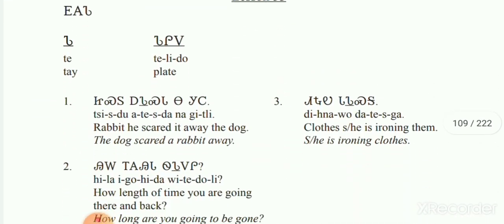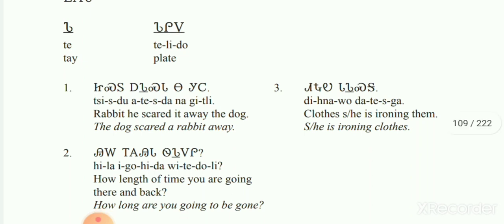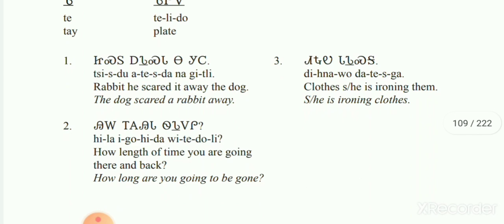Lesson 53. Character is Te. Your keyword is going to be Te Lido. Number 1, Number 2.